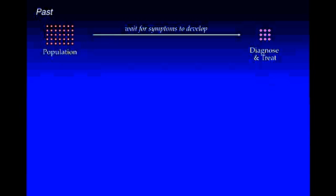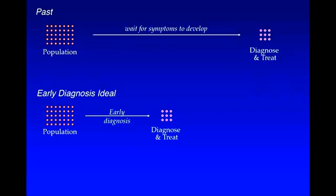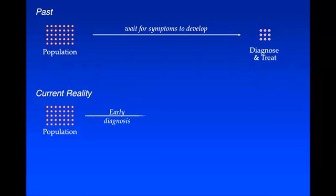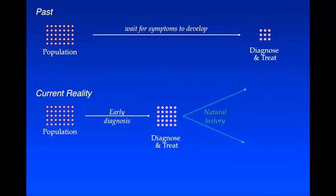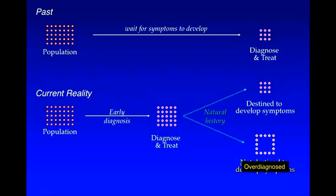Let me give it to you in a nutshell — the general problem. In the past, doctors cared for a population but waited for symptoms to develop, and then diagnosed and treated those patients. The early diagnosis ideal was to take that same population and advance in time our ability to diagnose those patients destined to develop cancer, with the hope that those found early were the group destined to develop symptoms. But the reality was quite different — whenever we look for cancer early, we find more patients. The natural history is more complex. Hopefully we got those destined to develop symptoms, but there's now definitely another fraction: those not destined to develop symptoms. That's the over-diagnosed fraction.